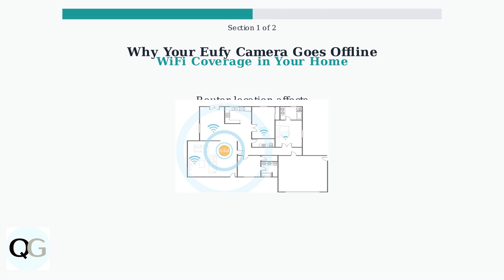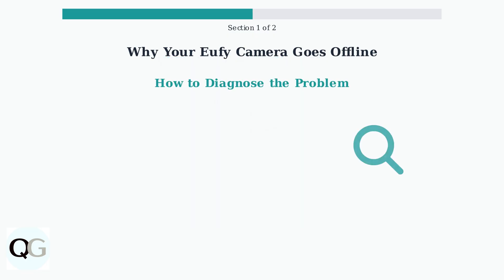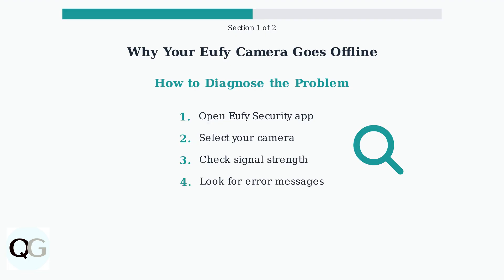Walls, floors, and distance all reduce signal strength. To diagnose your camera's offline issue, start with the eufy security app — open the app, select your camera, and check the signal strength reading. Look for any error messages that might indicate the specific cause of the connection problem.